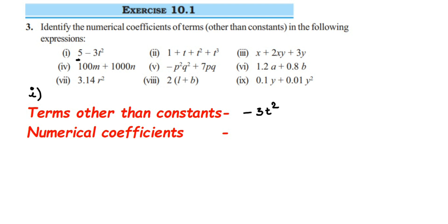Now for this term, what is the numerical coefficient? Terms are actually the product of factors. So the factors here are minus 3 and t into t. If I split this, it is minus 3 into t into t. In this, when you see a number — here minus 3 is a number — this is called the numerical coefficient.